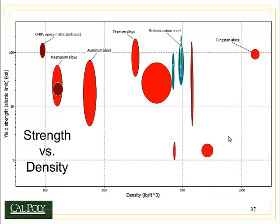Let's look at some of the materials available for bike frames and compare them for yield strength and density. With density on the x-axis, we see that tungsten is a very strong material but very dense, so it would not make a good bike frame — not to mention it would be difficult to shape. A preferable choice is medium carbon steel, which is very strong but also very dense. Better choices are titanium, then aluminum, magnesium, and ultimately carbon fiber reinforced polymers, which are both strong and very low density.